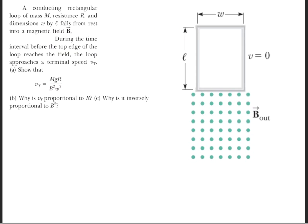Going back to part B of this question: part B asks why the terminal velocity is proportional to the resistance. Recall that the job of a resistor is to limit the amount of current that passes through it. So if the resistance increases, the current will decrease. When this happens, the loop of wire needs to acquire a greater terminal velocity that will create a large enough magnetic force to negate the force of gravity.